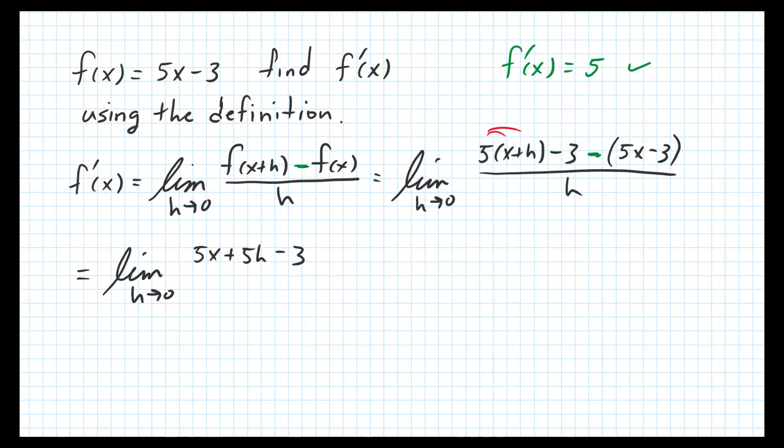And then here we'll distribute this negative 1, so minus 5x plus 3, all over h. Now we can see here 5x and negative 5x add to 0, negative 3 plus 3 adds to 0 as well.